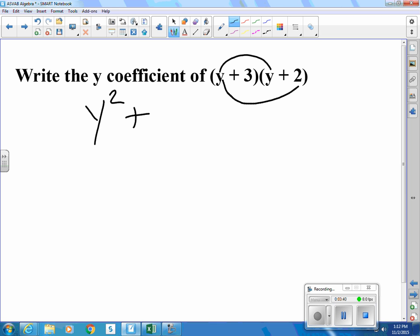y times 2 is 2y. And then, 3 times y is 3y. And 3 times 2 is 6. Combining like terms, 2y and 3y is 5y.